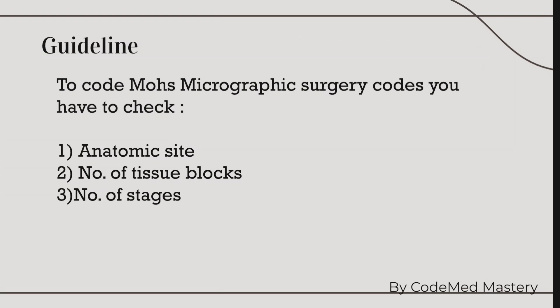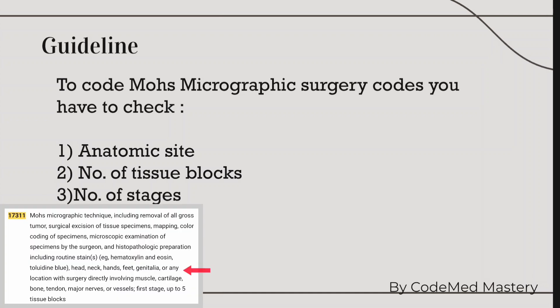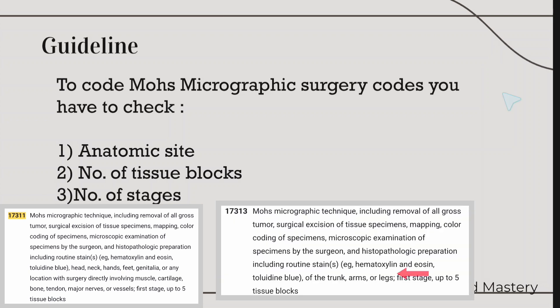First is the anatomic site. You have to check the anatomic site on which Mohs Micrographic Surgery is being performed. The code 17311 is for anatomic sites: head, neck, hands, feet, genitalia, or any location with surgery directly involving muscle, cartilage, bone, tendon, major nerves or vessels. And 17313 is for the anatomical sites trunk, arms, or legs.